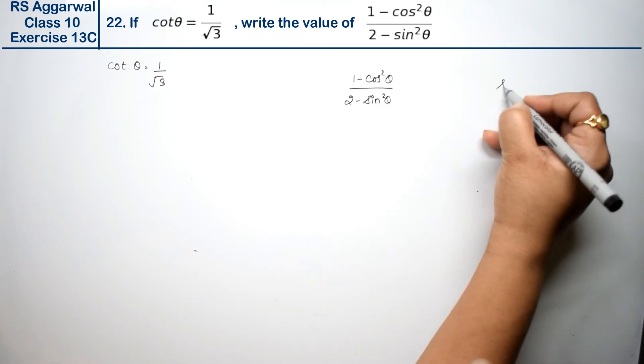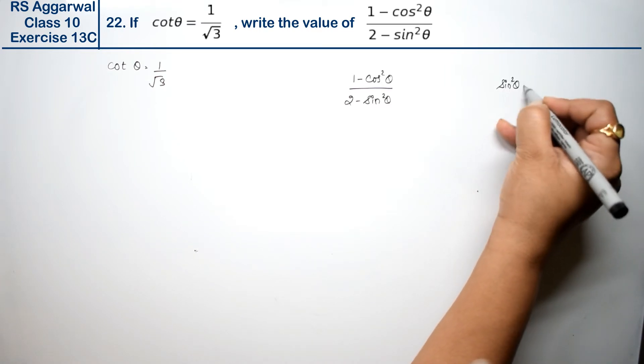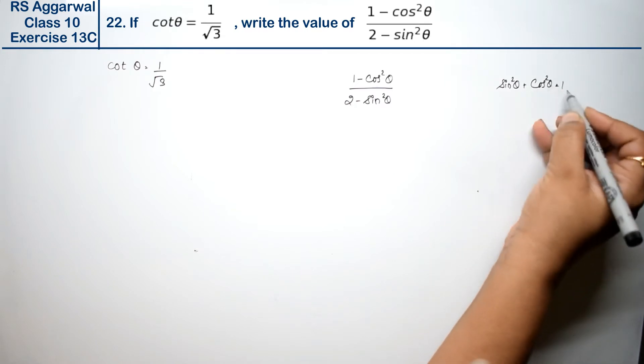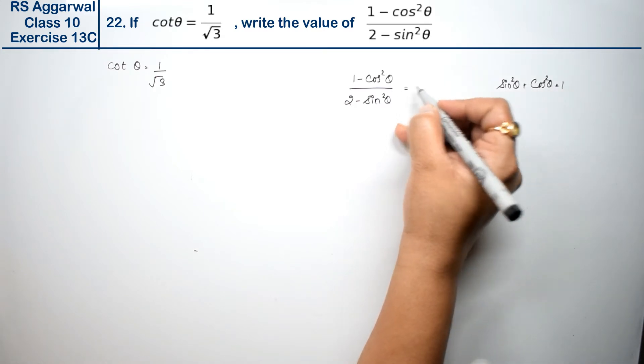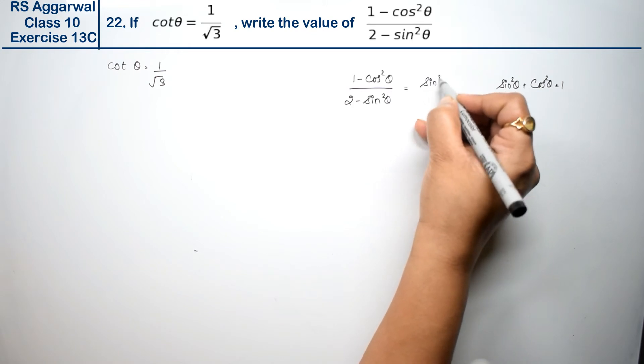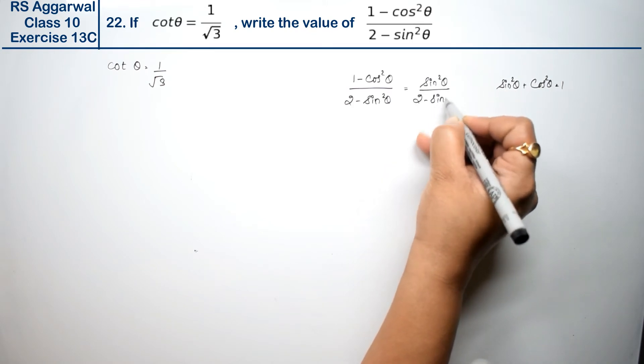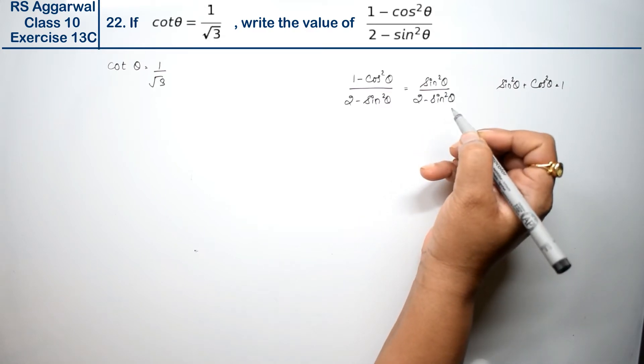We know that sin²θ + cos²θ = 1. So 1 - cos²θ is equal to sin²θ. So we can write this as sin²θ/(2 - sin²θ), right? Now what can we do?